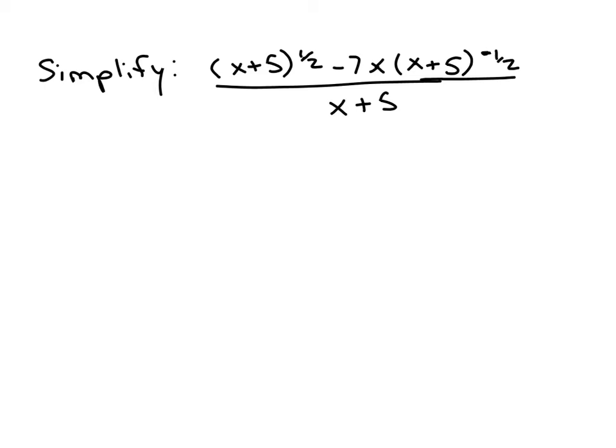One way would be to take a similar approach that I've shown in previous examples, which is to rewrite this expression without the negative exponents. So move this x plus 5 to the negative one-half, rewrite it as x plus 5 to the one-half in the denominator. Another way to look at this would be to look for common factors, and I'm going to take that approach with this problem.